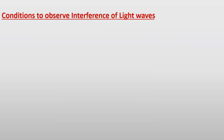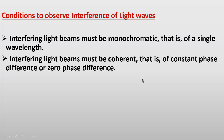Conditions to observe interference of light: Light ki interference observe karne ke liye interfering light waves ko kuch conditions meet karni hoti hain. Pehli condition ye hai ke light waves monochromatic honi chahiye — matlab dono ki wavelength same ho. Doosri condition ye hai ke interfering light beams coherent honi chahiye — matlab ya to unke darmiyan koi phase difference na ho, ya phase difference constant ho. Interfering light beams must be monochromatic (single wavelength) and coherent (constant or zero phase difference). Agar ye do conditions meet nahi hongi to interference of light waves observe nahi ki ja sakti.